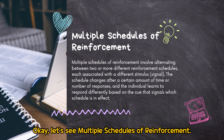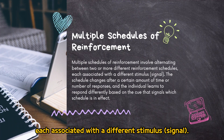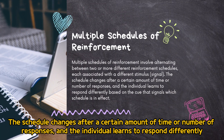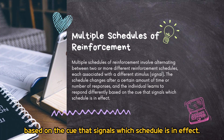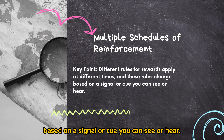Let's see multiple schedules of reinforcement. Multiple schedules of reinforcement involve alternating between two or more different reinforcement schedules, each associated with a different stimulus signal. The schedule changes after a certain amount of time or number of responses, and the individual learns to respond differently based on the cue that signals which schedule is in effect. Key point: different rules for rewards apply at different times, and these rules change based on a signal or cue you can see or hear.